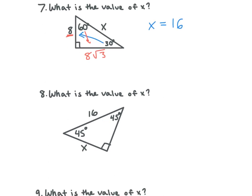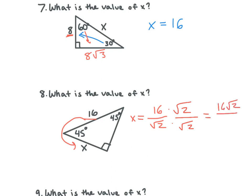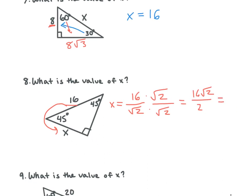Number 8 — what is the value of x? It gives us our hypotenuse and we have to go backwards and find the length of the leg. We have to go backwards, so what do we need to do? Divide. So we do 16 divided by square root 2. Can we leave our answer like this? No. We multiply the top and bottom by square root 2. We get 16 square root 2 on the top and 2 on the bottom. Simplified: 8 square root 2. So if it gives us the hypotenuse, we divide by square root 2 in a 45-45-90 triangle. If it gave us x and we had to find the hypotenuse, we would multiply.